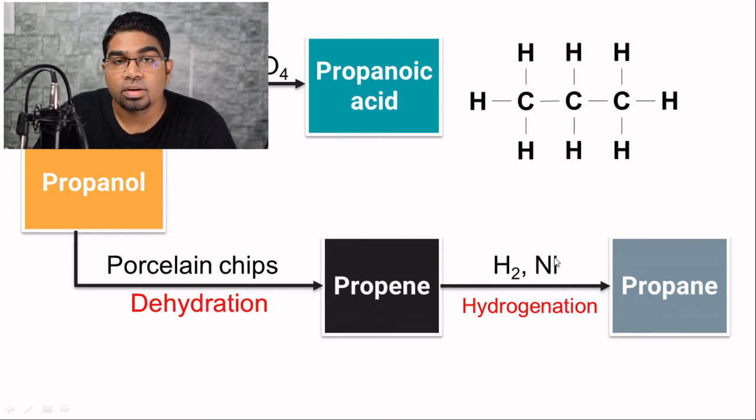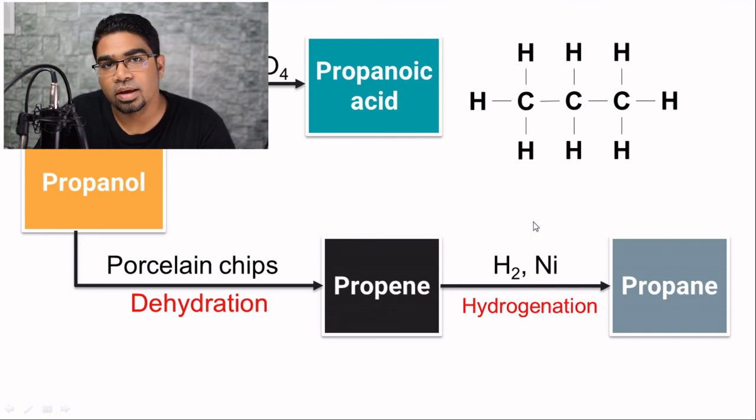The conditions for hydrogenation include nickel or platinum as a catalyst, a temperature of around 150 to 180 degrees Celsius, and a pressure of 200 atmospheres. There is another chemical property of alcohol: alcohols are very good fuels because they can be combusted. Alcohols undergo clean combustion in the presence of excess oxygen to form only carbon dioxide and water, just like alkanes and alkenes. These are the chemical properties of alcohol.